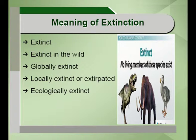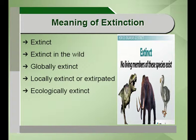Then there are locally extinct or extirpated species. Locally extinct species refers to species which were found in a particular local area in large numbers, but because of certain human activity, environmental activity, demographic activity, or any activity, they are not found in that particular area or are found in very small numbers, though they are found in some other area.